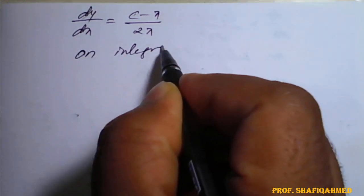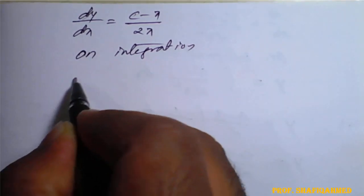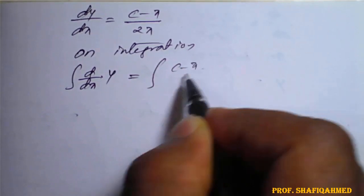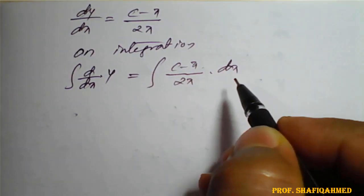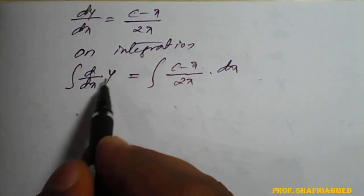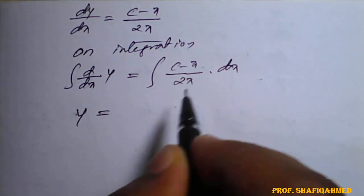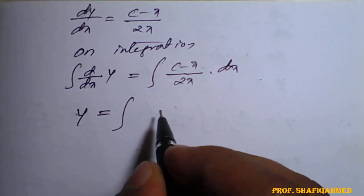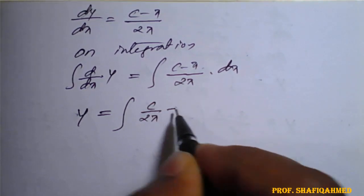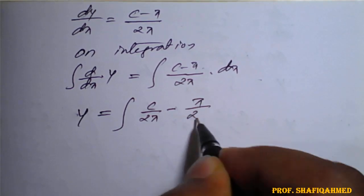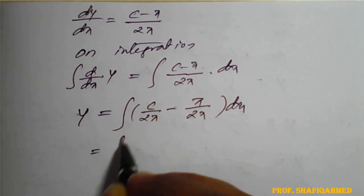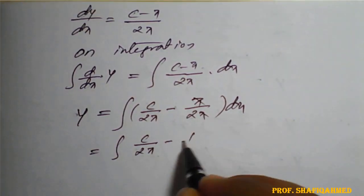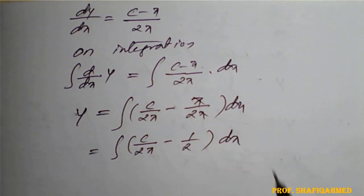On integration, integration of dy by dx of y is equal to integration of (c minus x) upon 2x with respect to x. So integration of dy it will become y. So c minus x upon 2x — I will separate it first: c divided by 2x minus x divided by 2x into dx, which is nothing but c divided by 2x minus 1 by 2 into dx.